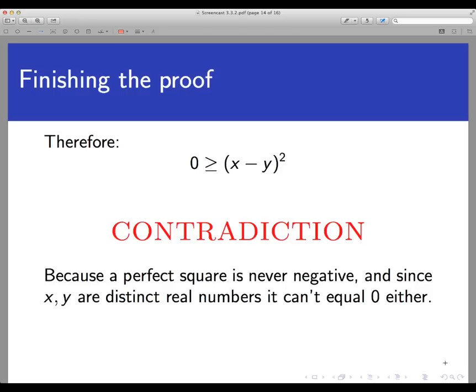So X minus Y isn't zero because X and Y are different. So here we have an expression that we arrive at it being less than or equal to zero, but for basic algebra reasons we cannot have it less than or equal to zero. So those two things cannot coexist. We are at an impasse or a contradiction.